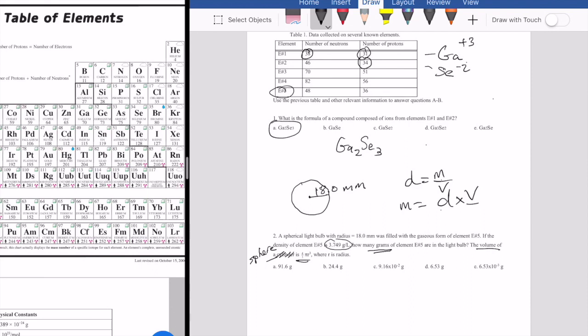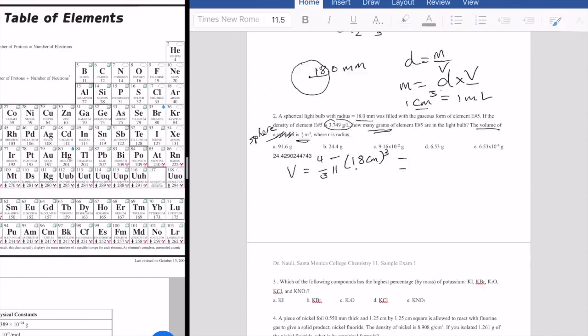We're going to take our volume and calculate it: four thirds pi, R in this case is 18 millimeters. Since this density is in liters, we want to eventually convert to that unit. So one cubic centimeter is one milliliter. So we'll convert this millimeter radius to centimeters first. So if you want to convert that, that becomes 1.8 centimeters. And then you're going to cube that based on the formula. I'm going to use a calculator here to find that out. So the answer I got is 24.42902, and this is the volume in cubic centimeters.